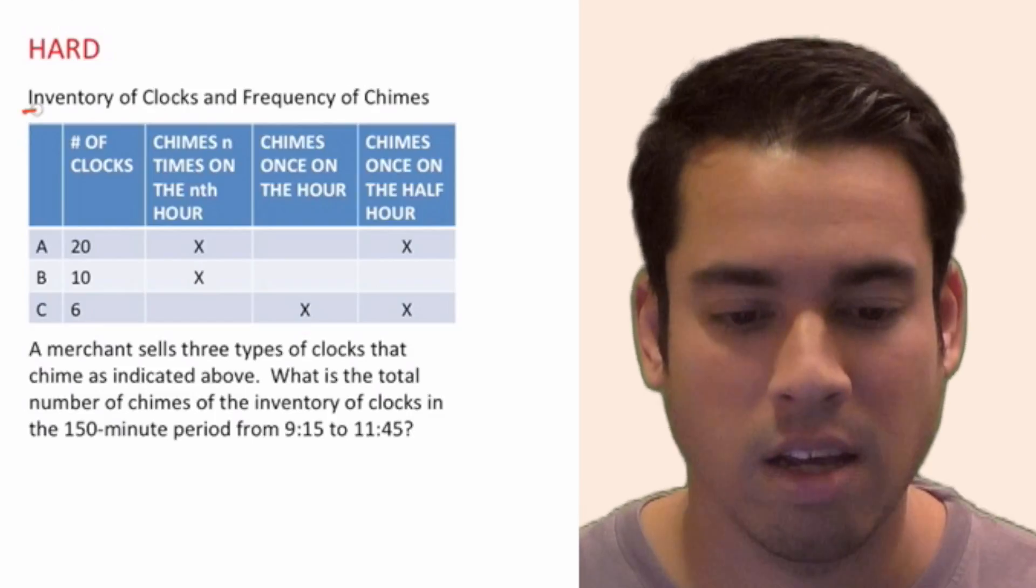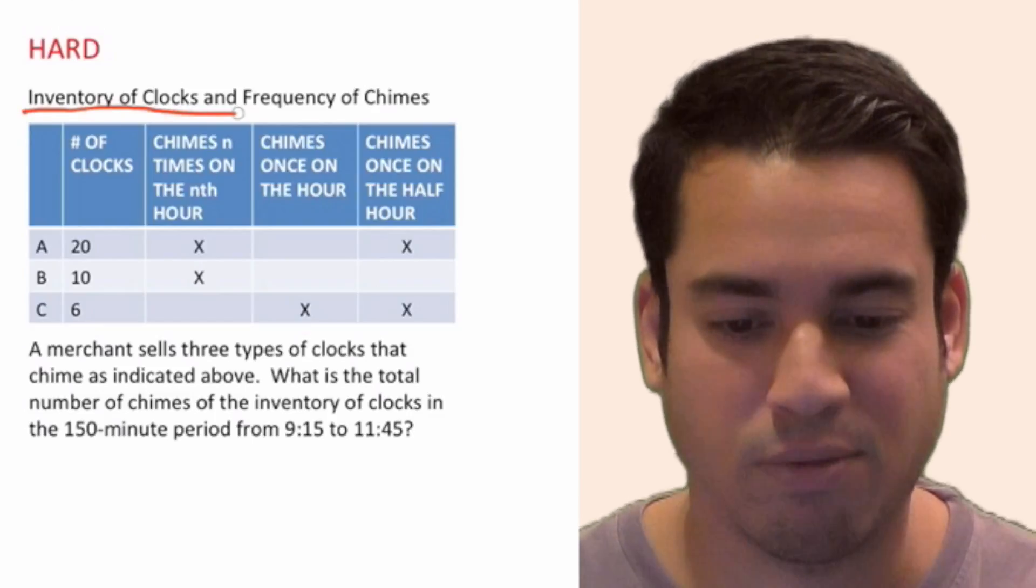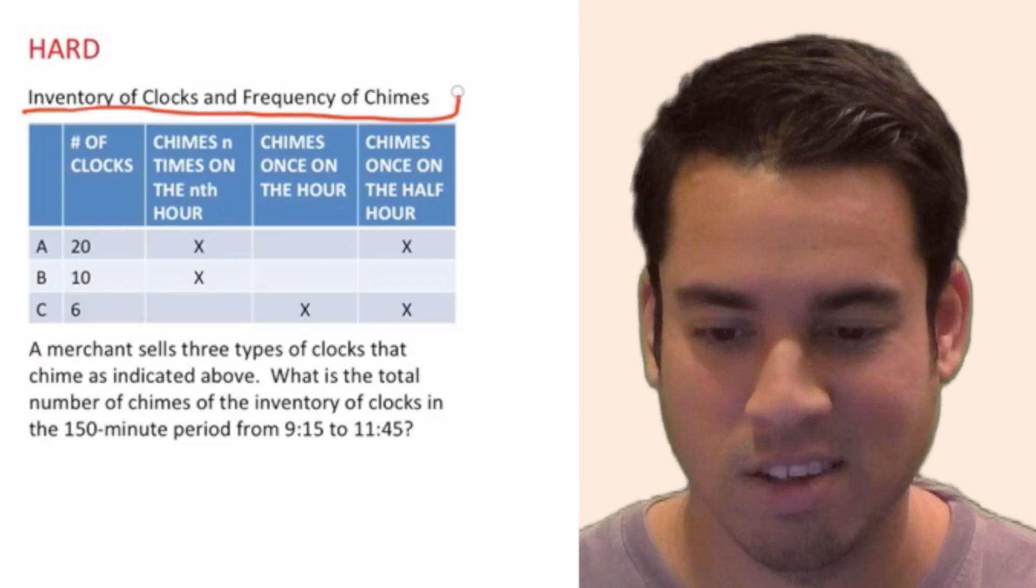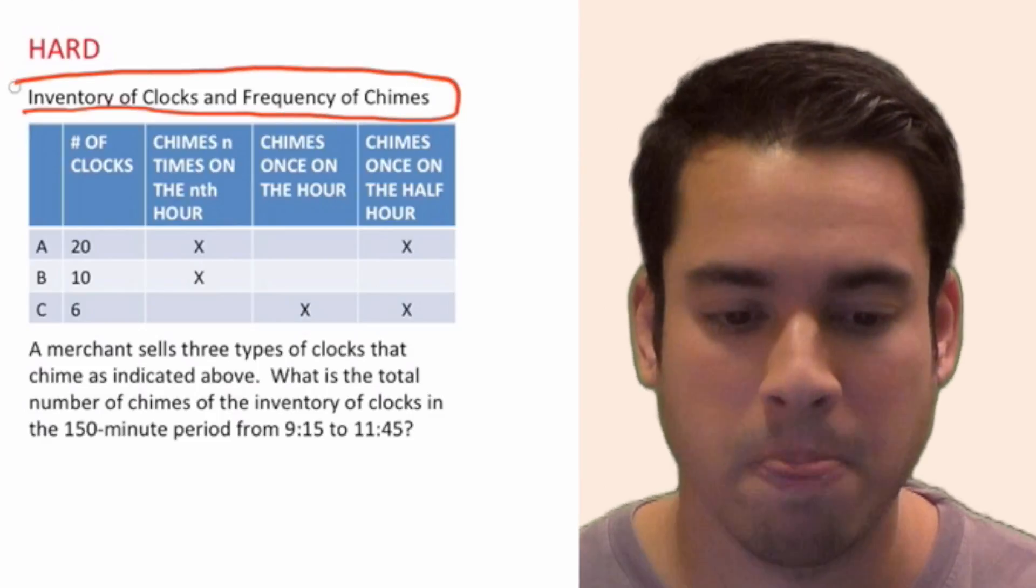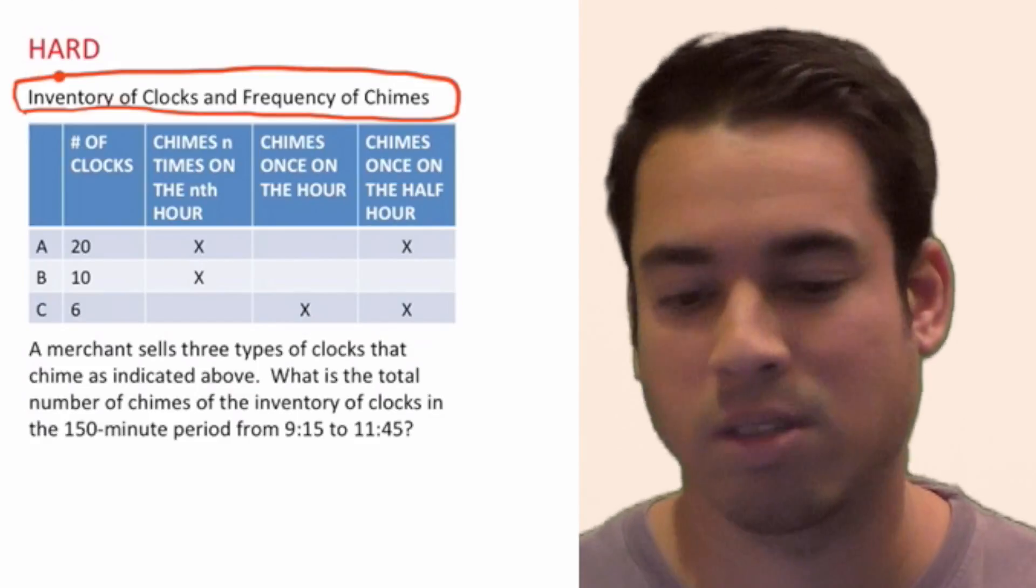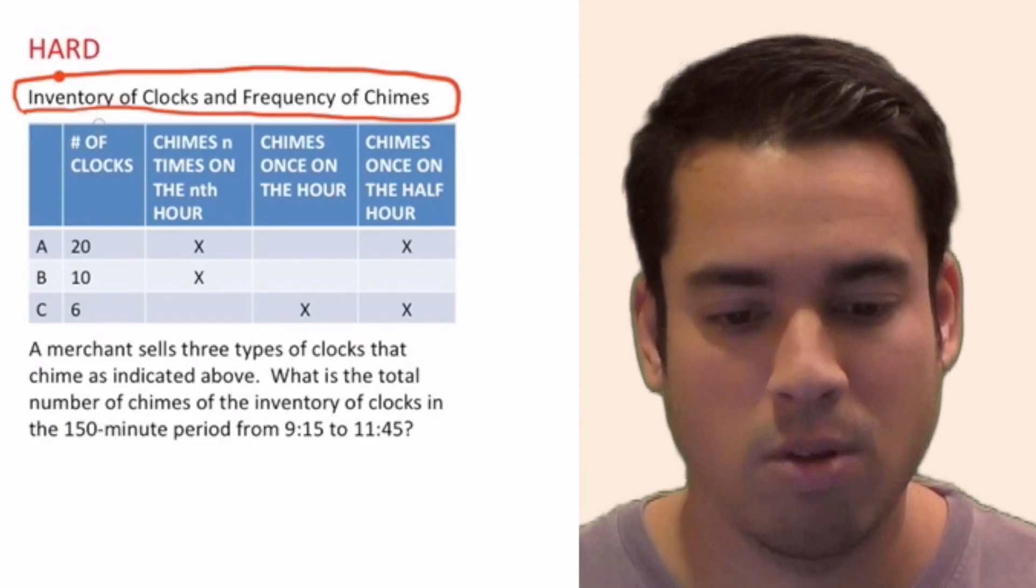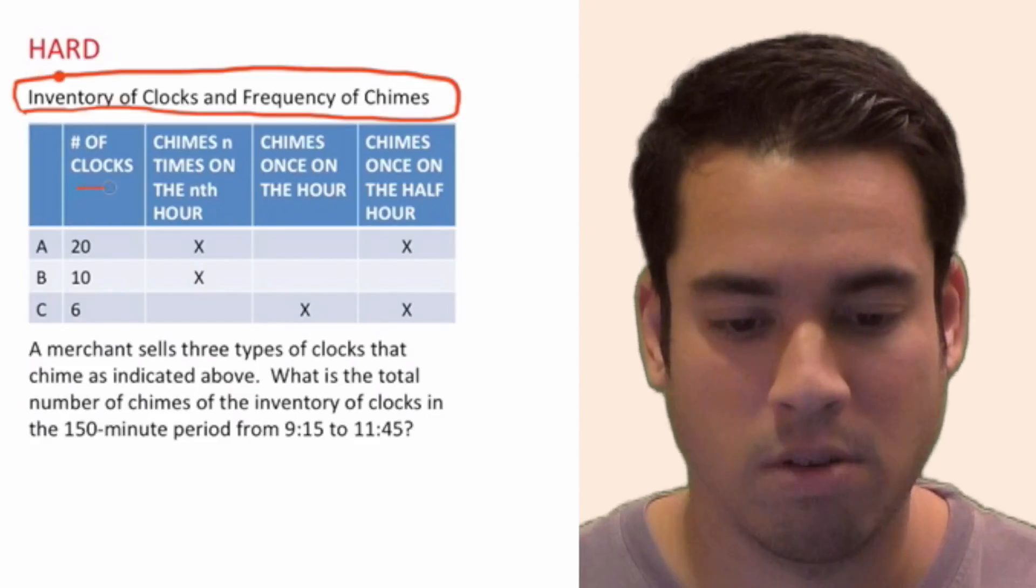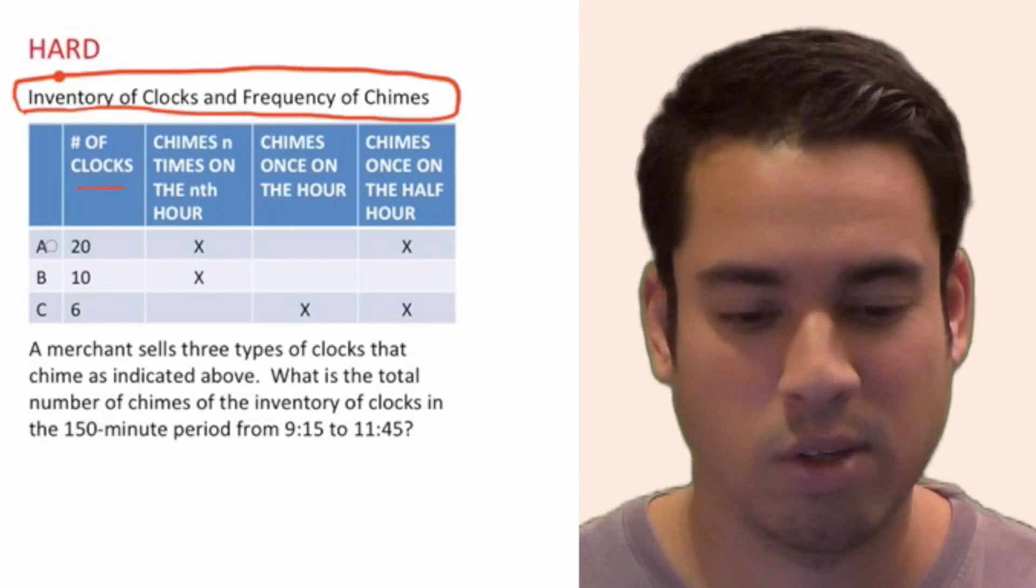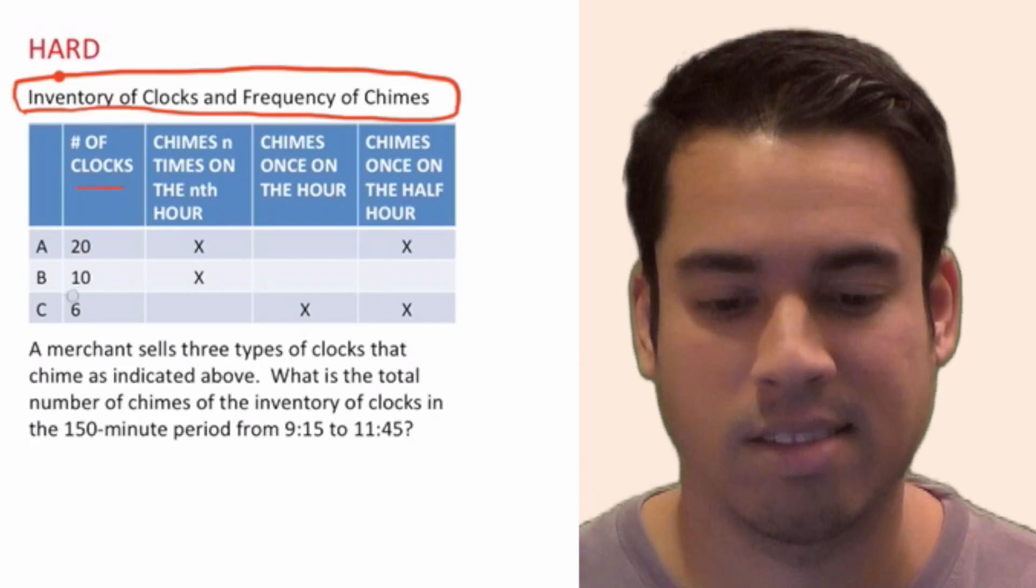So at the top it says inventory of clocks and frequency of chimes. This is a really bizarre topic, but this is about clocks and the number of times they chime. Now look, we have here the first column, number of clocks. So we have these categories of A, B, and C. It looks like A has 20 clocks, B has 10, and C has 6.